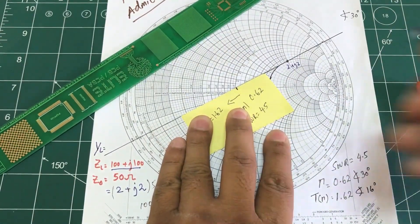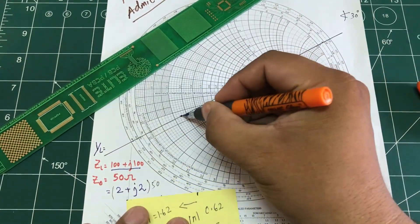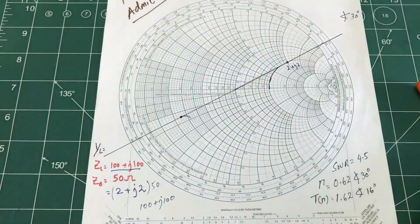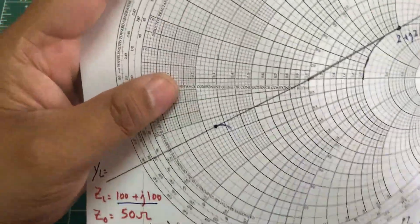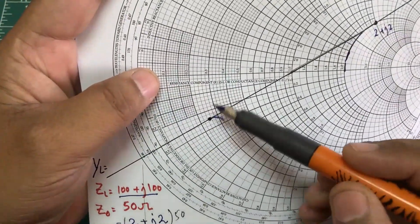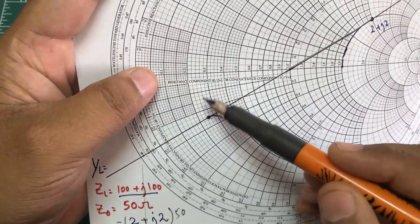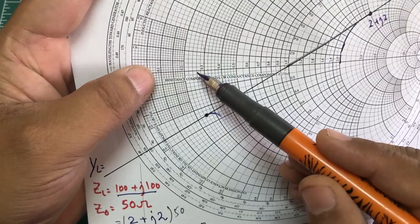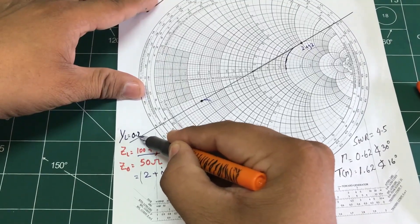I'm going to mark this point right here. Now it's just a matter of reading off this point. Looking at the real axis, this is between 0.2 and 0.3, so this is 0.2, 0.22, 0.24 — somewhere in the middle, so my real axis value is going to be 0.25.